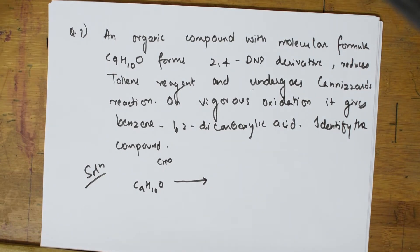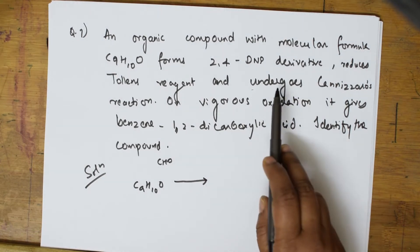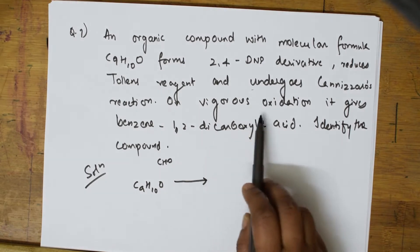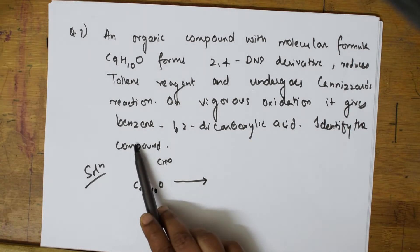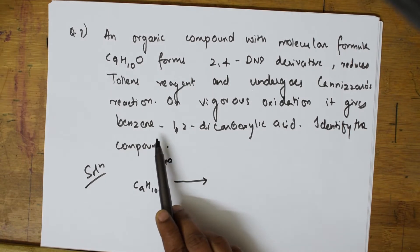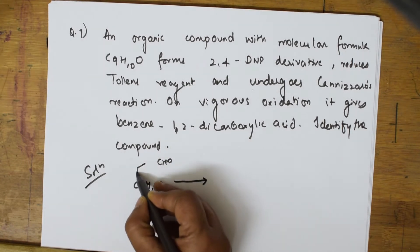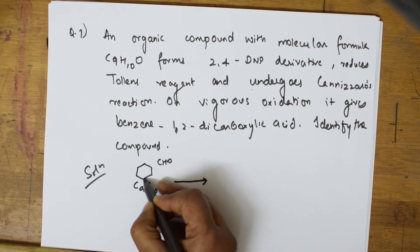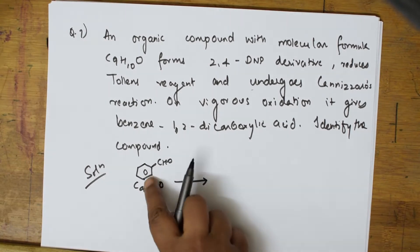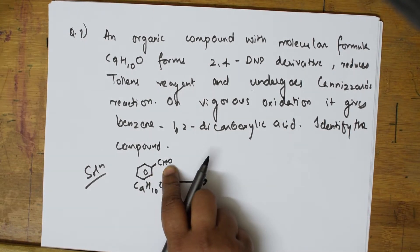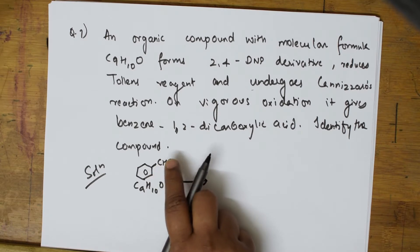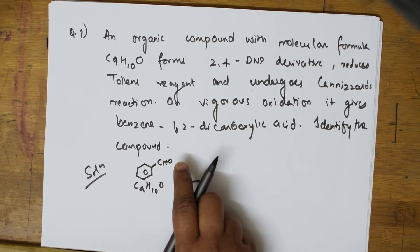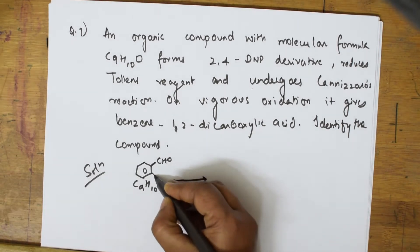They gave one more clue: on vigorous oxidation it gives benzene 1,2-dicarboxylic acid. That means benzene is already present in the product, so the reactant must also contain benzene. So we have C6H5-CHO, but we still need more carbons — there must be an alkyl group present.